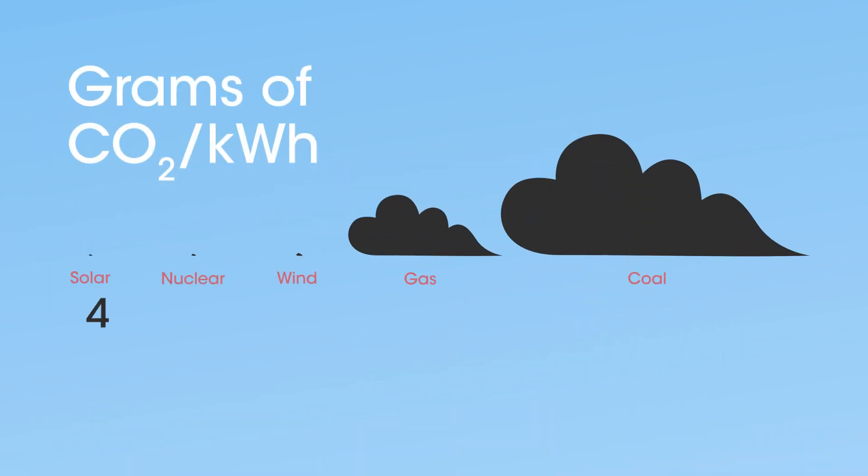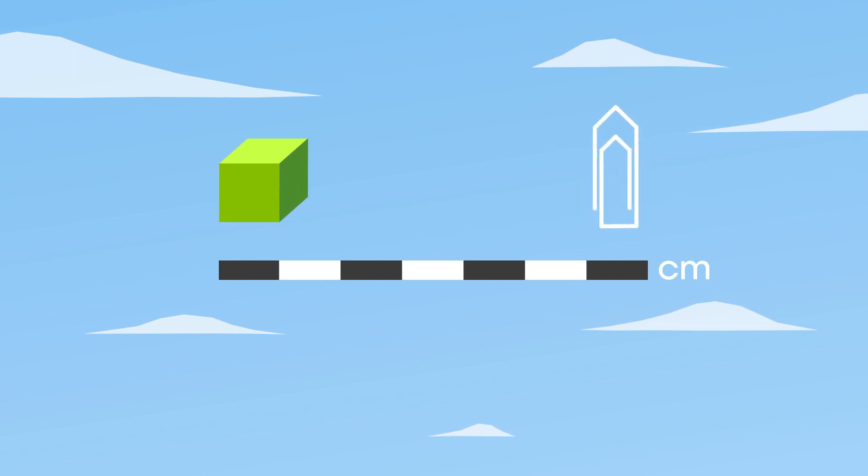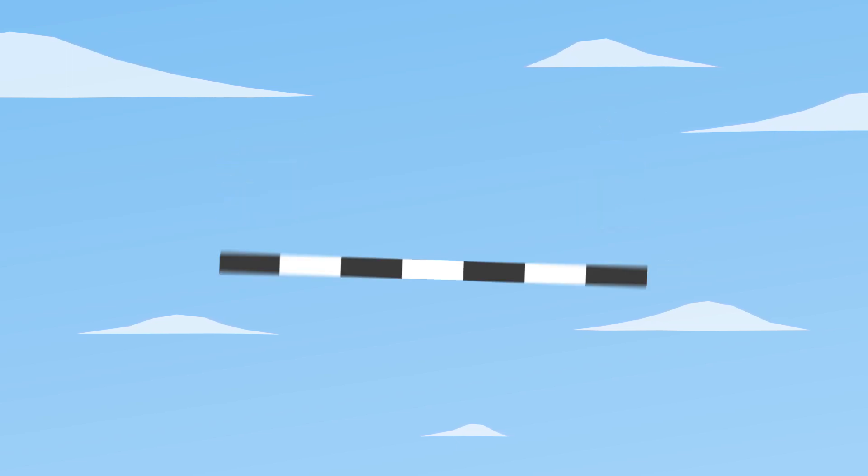Nuclear energy, like solar power and wind power, is a low carbon energy source, emitting only 16 grams of CO2 per kilowatt hour. It produces little volumes of waste, which are monitored with great attention.